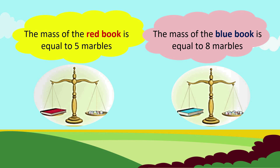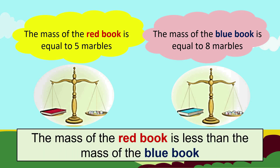This is also a weighing scale. The mass of the red book is equal to 5 marbles. The mass of the blue book is equal to 8 marbles. So, pupils, which book is heavier? Yes, you are right — the blue book is heavier than the red book. The mass of the red book is less than the mass of the blue book.